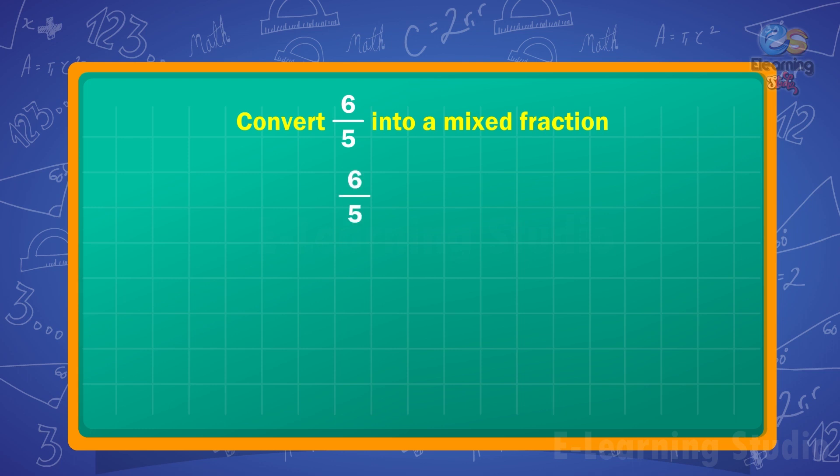Children, we know that 6 upon 5 can be represented as 6 divided by 5. So divide 6 by 5. We get one whole, and what is left is 1 upon 5.